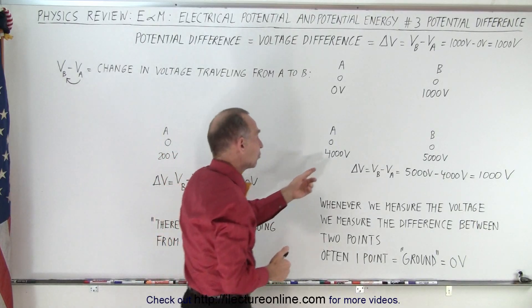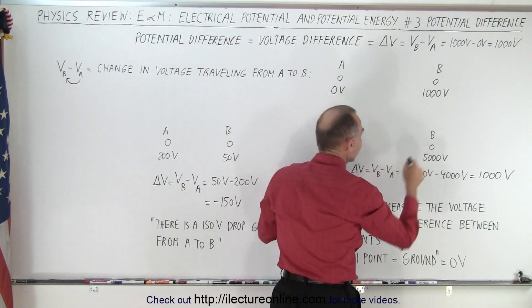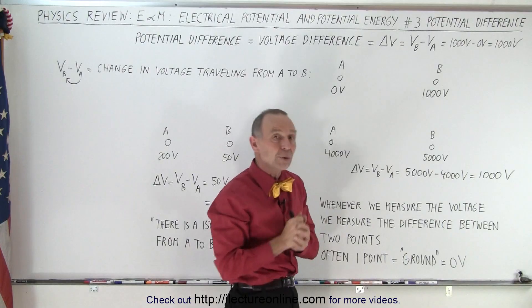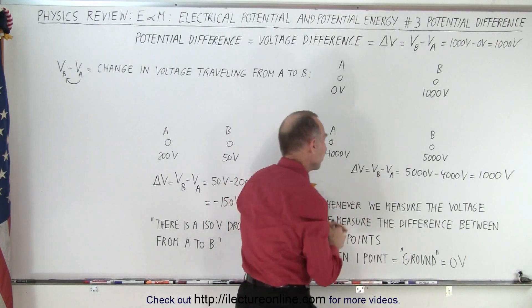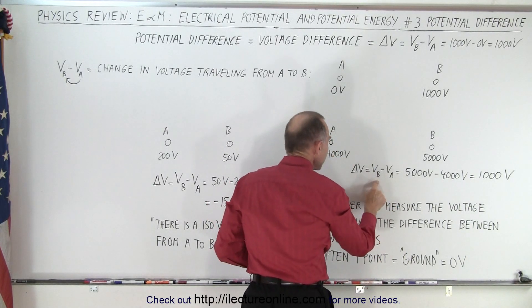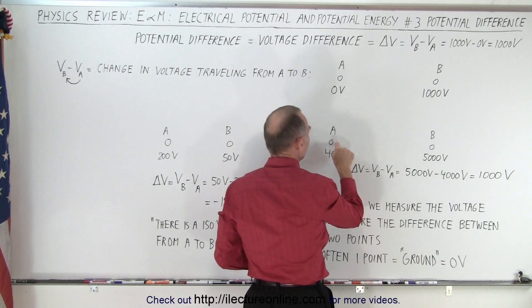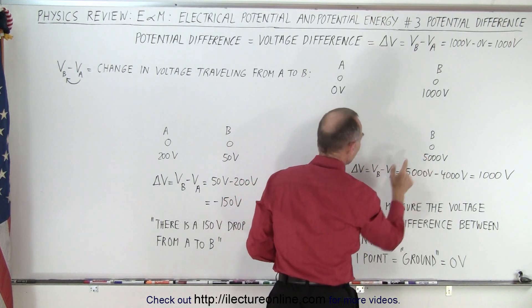But it could be that A is at 4000 volts and B is at 5000 volts and we want to know the difference between the two. So we measure the difference and so we travel from A to B and the voltage changes from 4000 volts to 5000 volts.